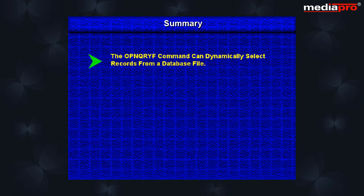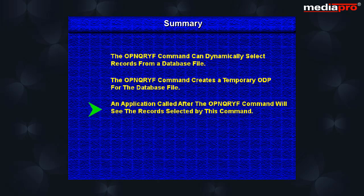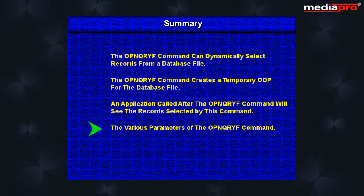Summary: We saw how the open query file can be used to dynamically select records from a database file without having to create a DDS for it. The open query file creates a temporary ODP for the database file. An application that is called after the open query file command will use this ODP and will only see the records selected by the open query file command. We saw the various parameters of the command and also saw how some of the parameters provided features that are not available with DDS. We also saw the copy from query file command.